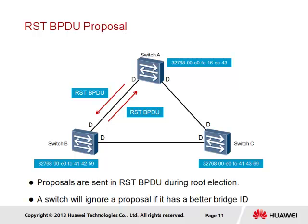In this example, an RSTP BPDU is generated and transmitted by switch A to assert its position as the root bridge and designated switch for the segment. The RSTP BPDU transmitted is considered a proposal since the proposal bit in the BPDU flags field is set. After receiving the RSTP BPDU, switch B will proceed to assess the BPDU to determine whether the bridge ID is superior to its own. If not, the RSTP BPDU received will be discarded and switch B will continue to generate its own BPDU. If the received BPDU is superior, switch B will begin a process of synchronization.